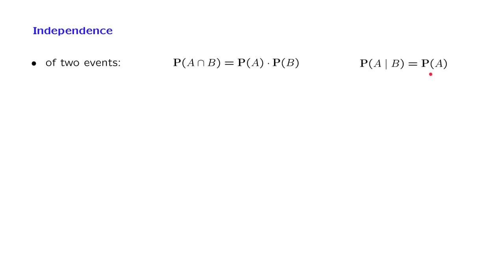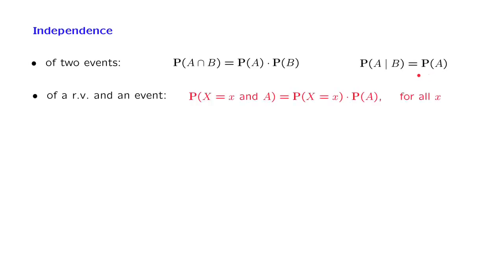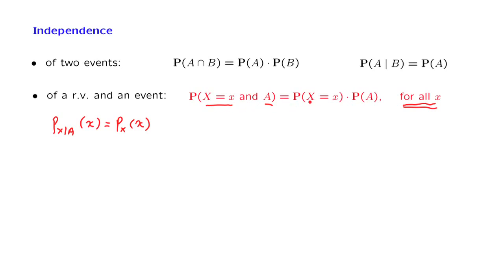We have a similar definition of independence of a random variable and an event A. The mathematical definition is that event A and the event that X takes on a specific value are independent in the ordinary sense. So the probability of both of these events happening is the product of their individual probabilities, and we require this to be true for all values of little x. Intuitively, if I tell you that A occurred, this is not going to change the distribution of the random variable X. This is one interpretation of what independence means in this context, and it must hold for all values of little x.